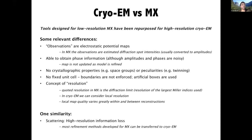Because we're not dealing with crystals, there are no crystallographic properties such as space groups, or peculiarities such as twinning to deal with. But we do have other issues, such as there being no fixed unit cell — because the boundaries aren't enforced, artificial boxes have to be used. Also the concept of resolution is different. The quoted resolution in MX is the diffraction limit, but in cryo-EM it's based on the signal-to-noise ratio, and we can also consider the local resolution. The local map quality varies greatly both within and between reconstructions.